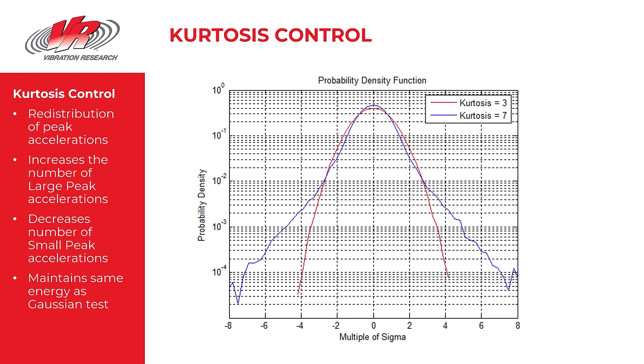But it does so by taking some, perhaps we might call medium sized accelerations and converting them to large peak accelerations. But at the end of the redistribution, the total energy of the test remains the same.